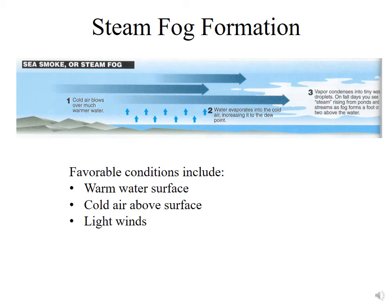We can also have steam fog. If cold air blows over much warmer water, the water evaporates into the cold air, raising the dew point, while the cold air — which has a low saturation water vapor pressure — cools the moist air readily to its dew point. The favorable conditions are warm surface water with cold air above and light winds to minimize mixing. This is common over mountain lakes during fall when cold air moves over them; they look like they're steaming. It can also happen over the ocean when cold air moves over warm water.